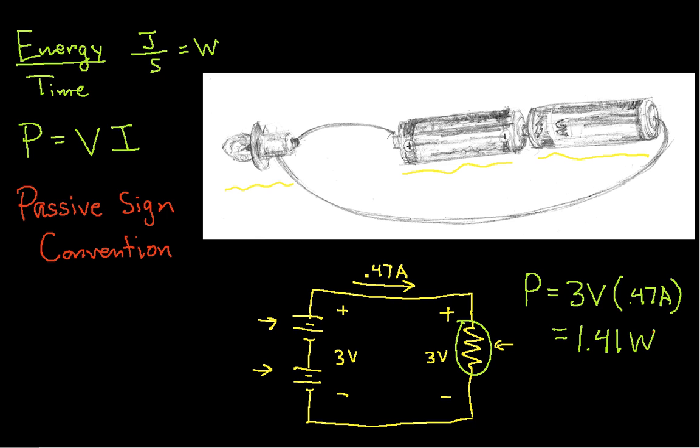And the idea behind the passive sign convention is the following. If I have a current that is flowing through a component from a positive potential to a negative potential, from a higher potential to a lower potential, then I write this as P is equal to VI, as I've done in this example. And if the current is indeed flowing from higher potential to lower potential, I get a positive value. You'll notice that this is positive. And a positive value means that the component is dissipating power.